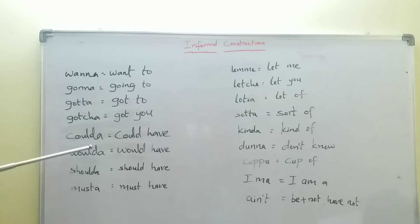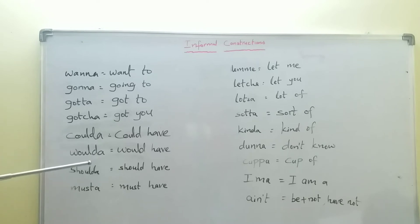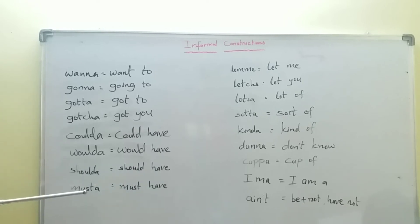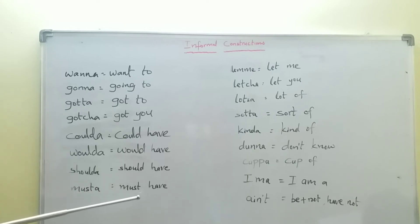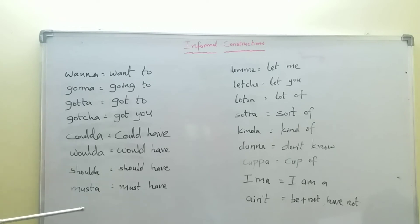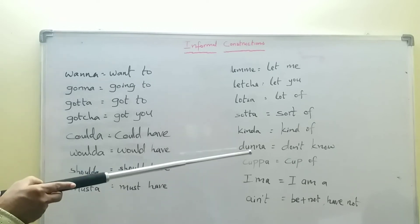Coulda means 'could have.' Raju coulda completed this work. Similarly, woulda: 'I would have completed this work' becomes 'I woulda completed this work.' Shoulda means 'should have': Raju shoulda passed this exam. Musta means 'must have': She must have cooked food becomes 'She musta cooked food.'